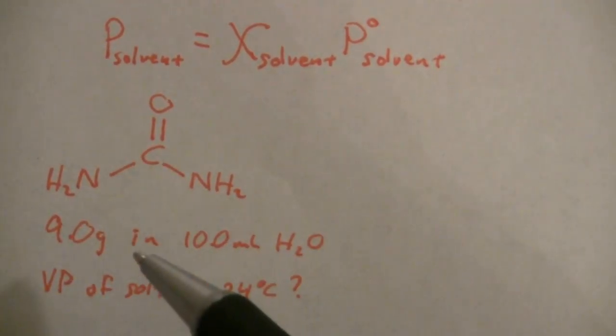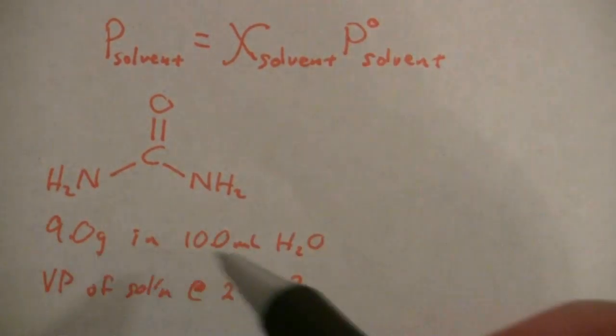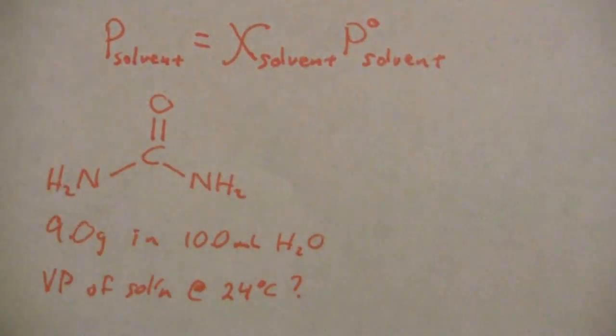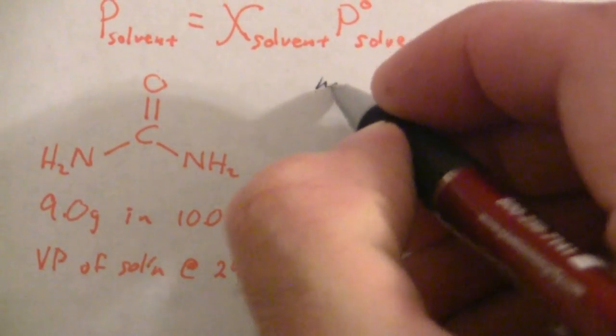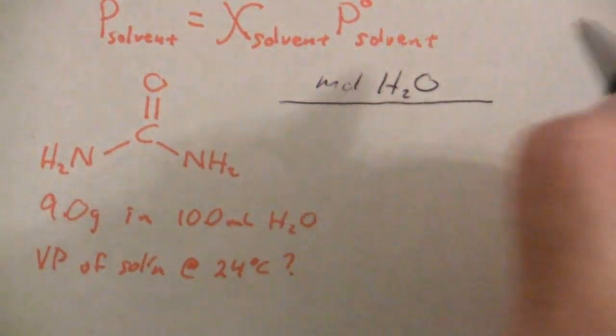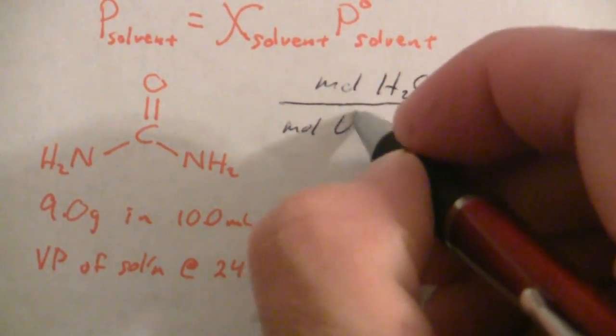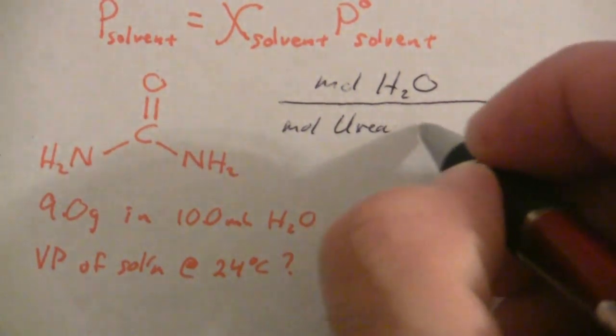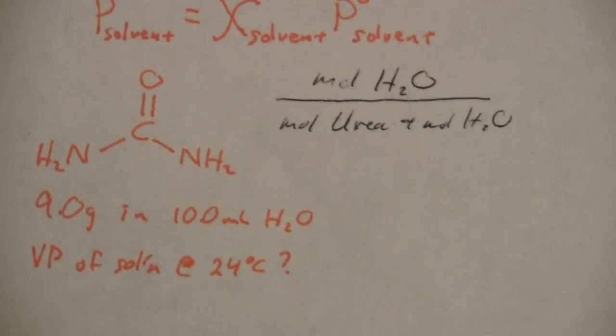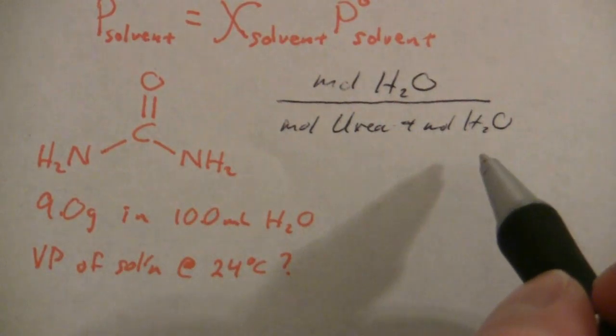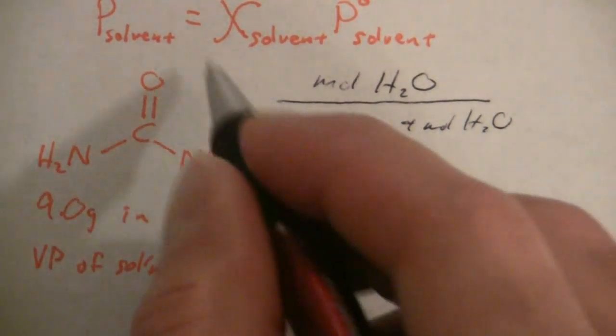That's the equation we're going to use. We have 9 grams of urea dissolved in 10 milliliters of water. What we need to find is the mole fraction of the solvent. We need to find how many moles of water are in the total number of moles in this solution, which is moles of urea plus moles of water.